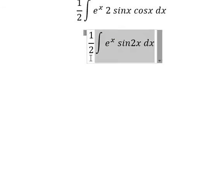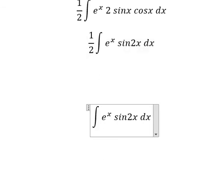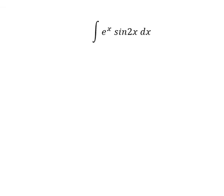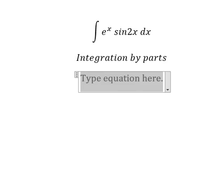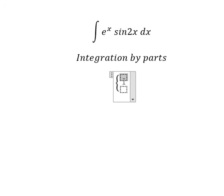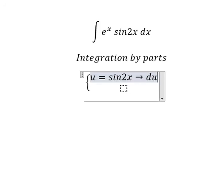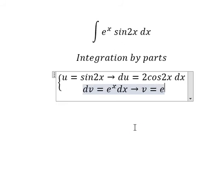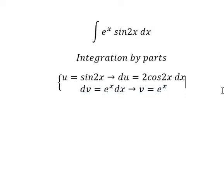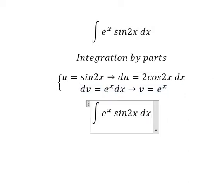Now I just concentrate about this one only. So we need to use integration by parts. I will put u equals sin(2x), so du we have to differentiate sin(2x). For dv we have e to the power of x dx, and if we do this integration we have v equals e to the power of x.